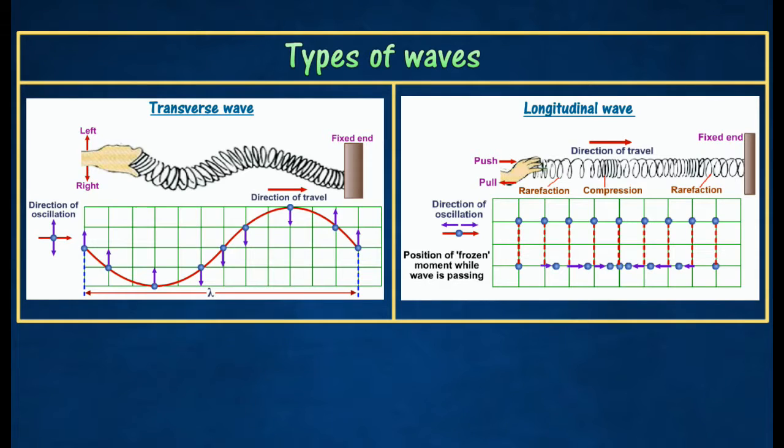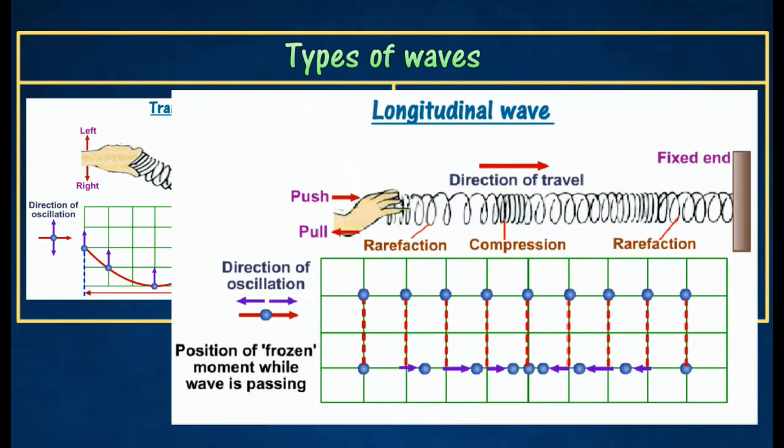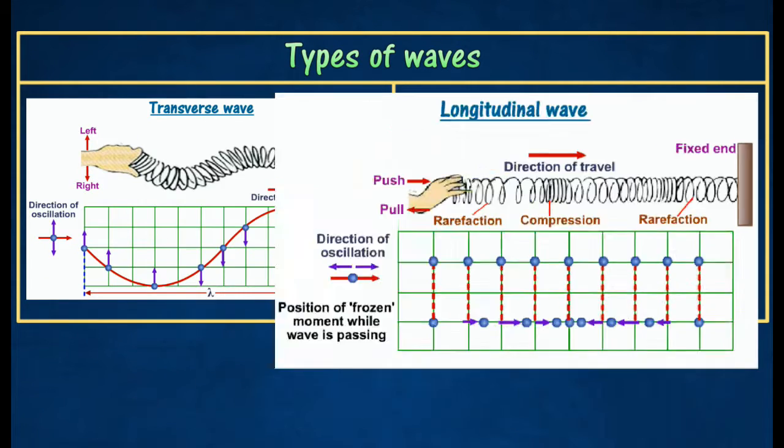Types of Waves. There are two types of waves, which are transverse waves and longitudinal waves.